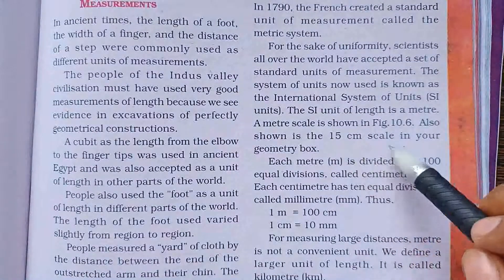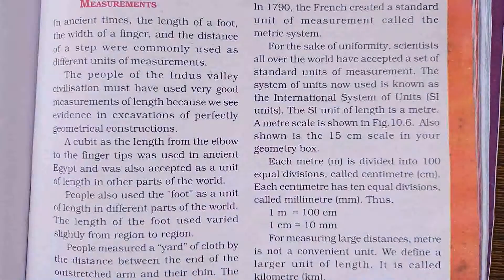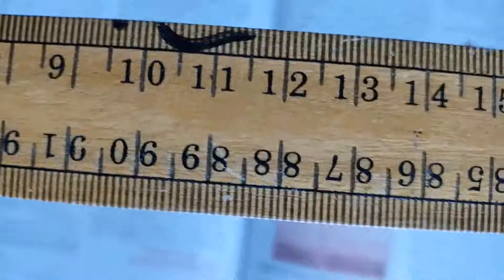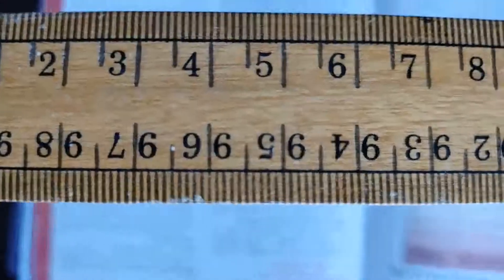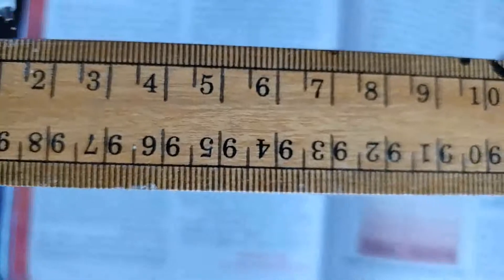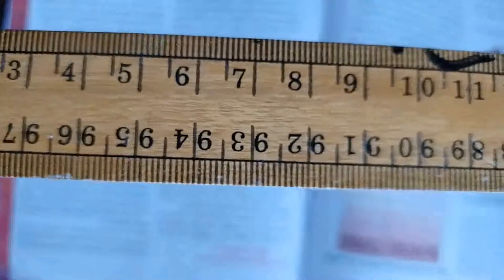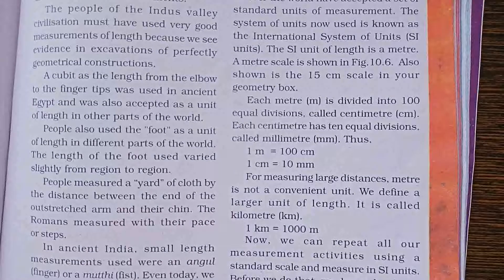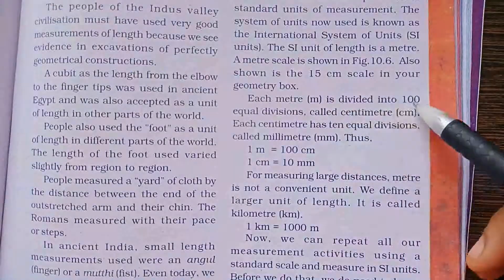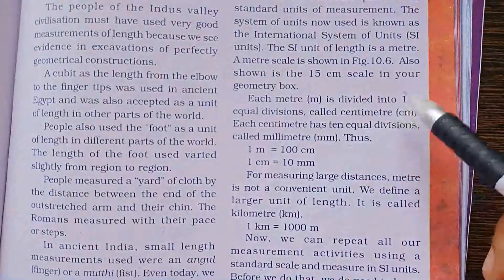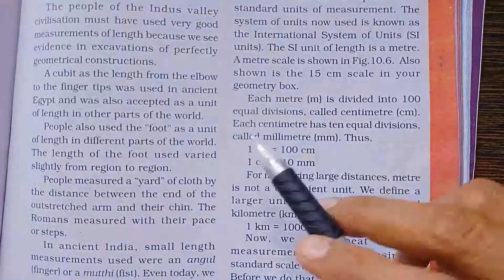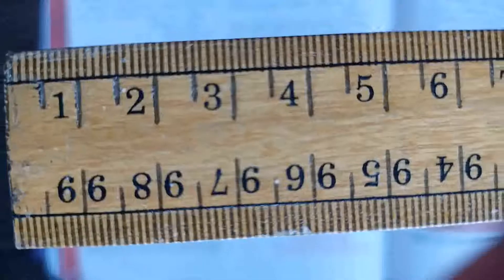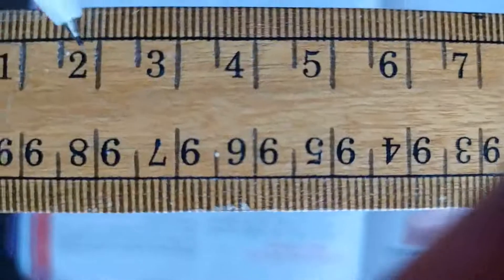A meter scale is shown in figure 10.6, also shown is the 15 centimeter scale in your geometric box. Look at here — it is a scale, a geometric scale shown in centimeters: 1 centimeter, 2 centimeter, 3, 4, 5 centimeter. Each meter is divided into 100 equal divisions called centimeters. Each centimeter has 10 equal divisions called millimeters. एक centimeter से 2 centimeter के बीच में 10 millimeters होते हैं.